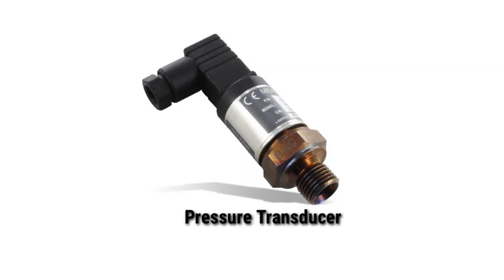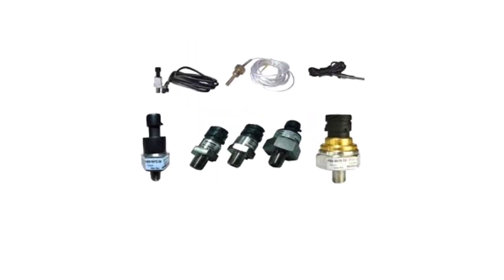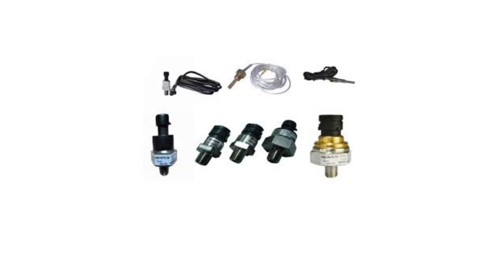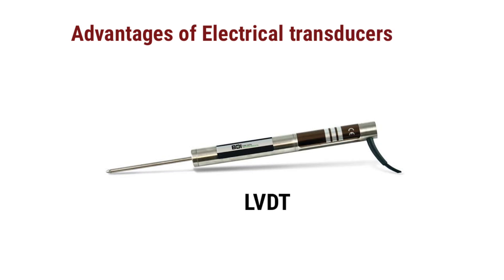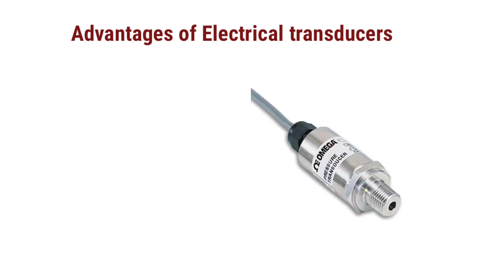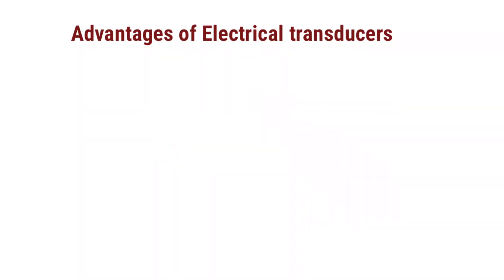In the last class we discussed about what is a transducer, what are the various types of transducers, and how they are classified — like active and passive transducers, displacement transducers, temperature transducers, and so on. Now we go for the advantages of electrical transducers compared to other types of transducers.